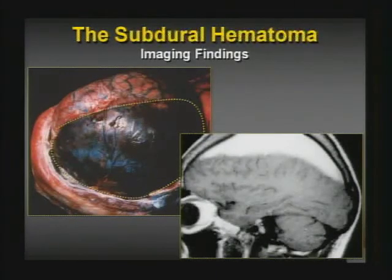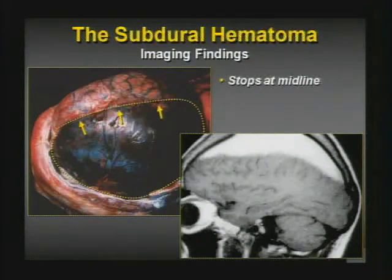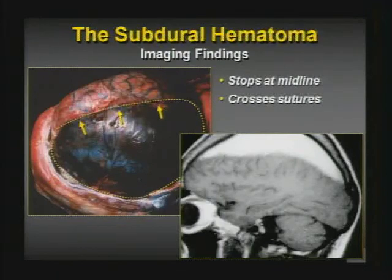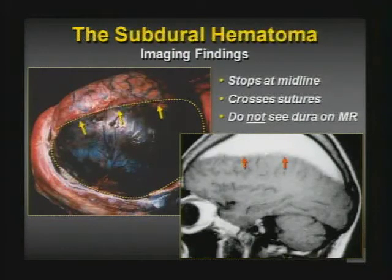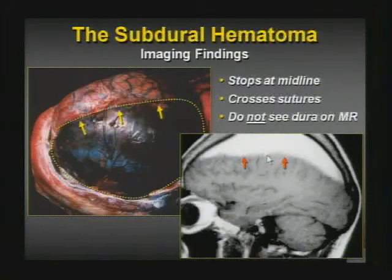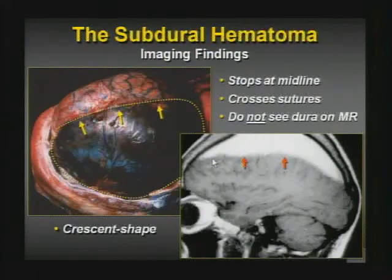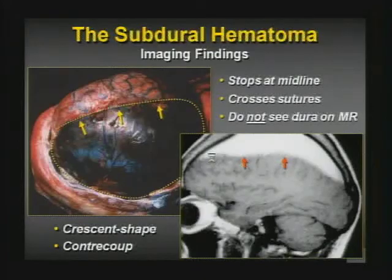The characteristic findings of a subdural hematoma: it stops at the midline because it can't cross the falx, but it crosses the sutures. You do not see the dura because the collection is beneath it. You can see this holohemispheric collection of methemoglobin abutting the brain parenchyma surface with no black line as you'd see in the epidural space. It's frequently crescent-shaped, and the vast majority occur at the contra-coup site.